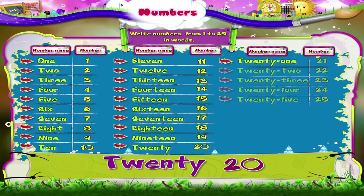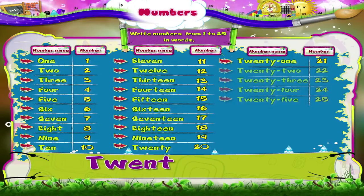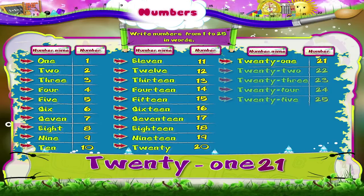T-W-E-N-T-Y 20, O-N-E 1 — 21. T-W-E-N-T-Y 20, O-N-E 1 — 21.